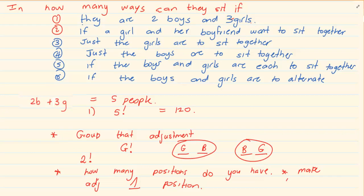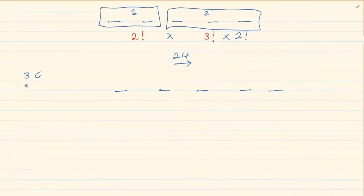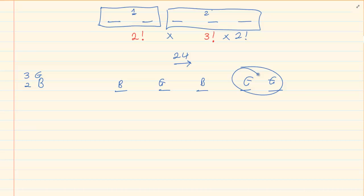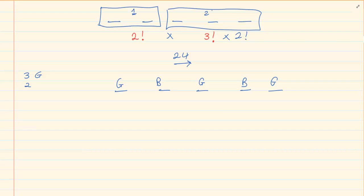The last one says if the boys and girls are to alternate — girl, boy, girl, boy, girl. Now, we have three girls and two boys. If I put a boy first then a girl, then a boy, then a girl, look what happens at the end — I don't have an alternating cycle. The only option is girls in positions one, three, five and boys in positions two, four. So the only arrangement is girl, boy, girl, boy, girl — we cannot adjust it any other way. The only way for the overall arrangement is one. But we can change the boys among themselves and the girls among themselves. So the final answer is one times two factorial times three factorial, which gives you twelve.